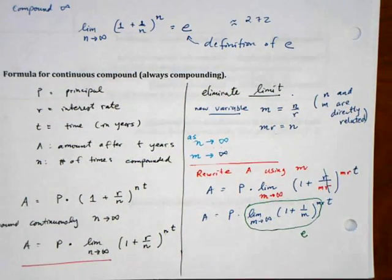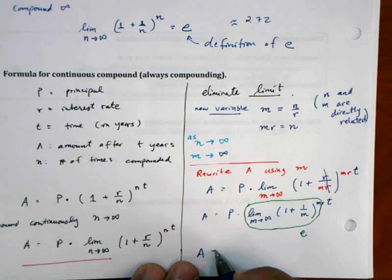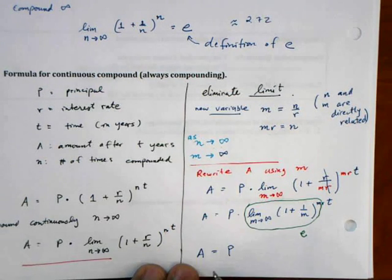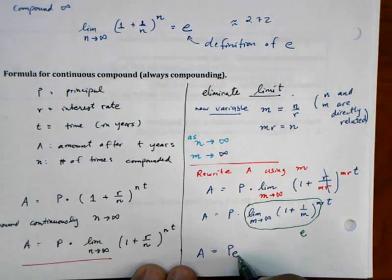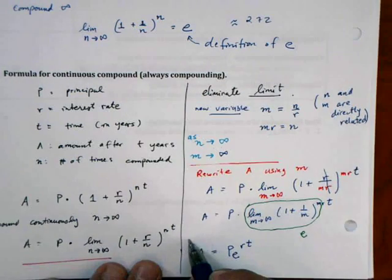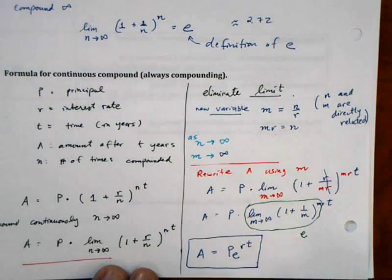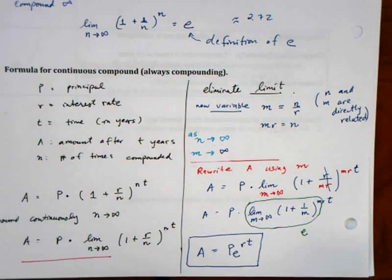And what that allows us to do is to replace the limit with a single letter E. So A equals PE raised to the RT. And this is a beautiful equation because it allows us to deal with scenarios where we have to calculate something an infinite number of times.